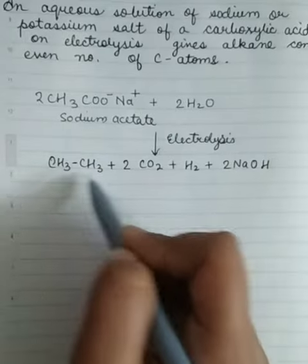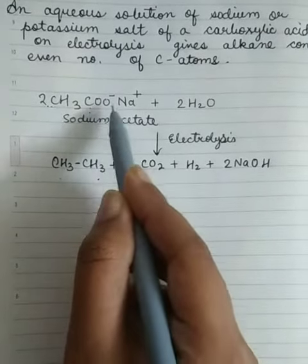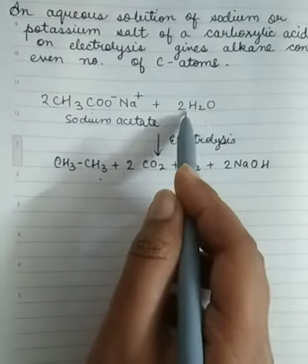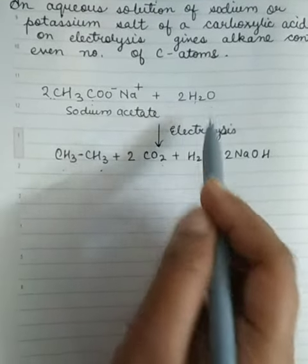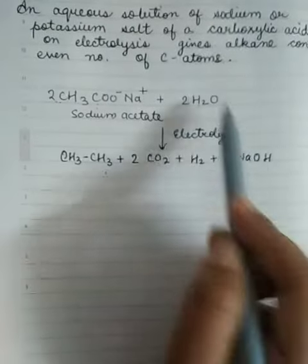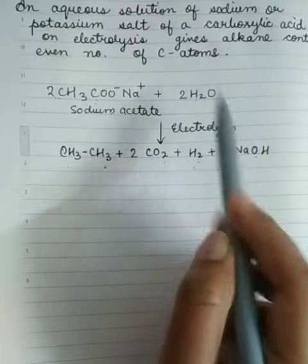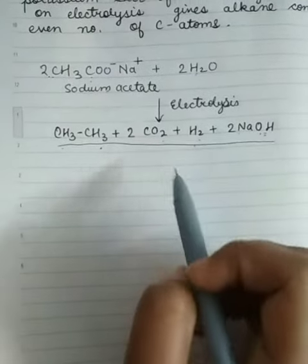From here you can see CH3 and CH3, 2 moles of CH3 plus 2 moles of CO2. Here you have two moles of hydrogen molecules, four hydrogen atoms. From here you get two hydrogen atoms. Here two moles of Na, two moles of O from here and one mole of H2 is over here. So this is the product obtained during electrolysis of sodium salt.